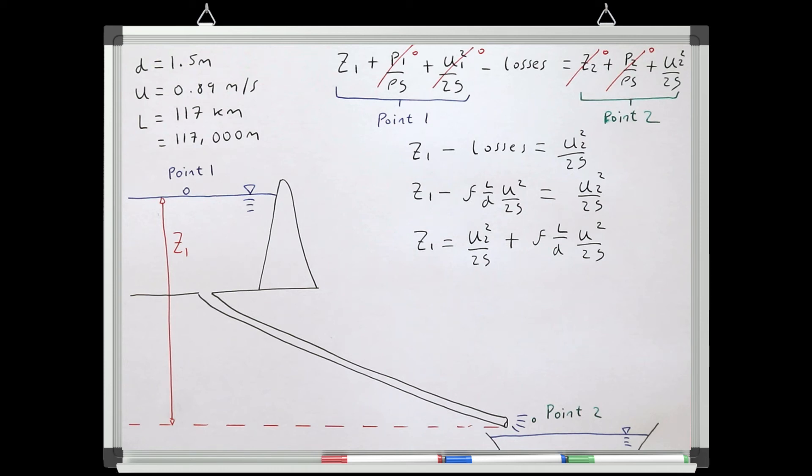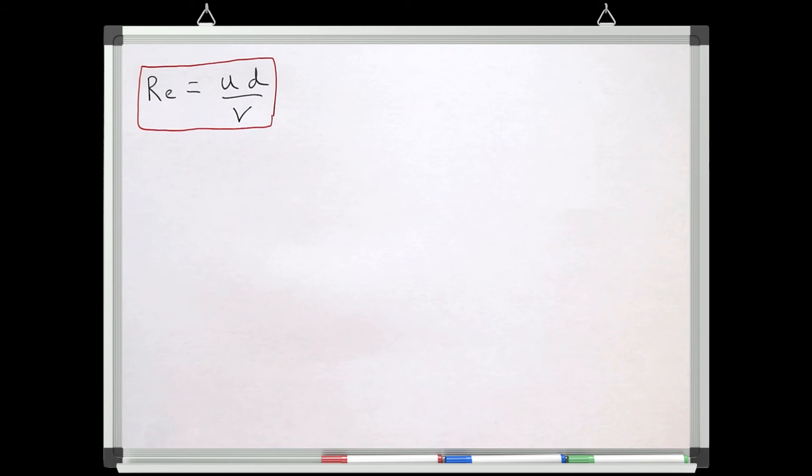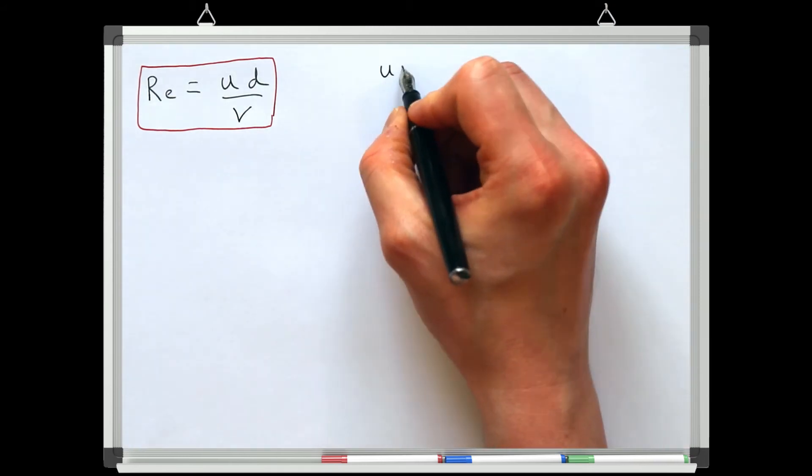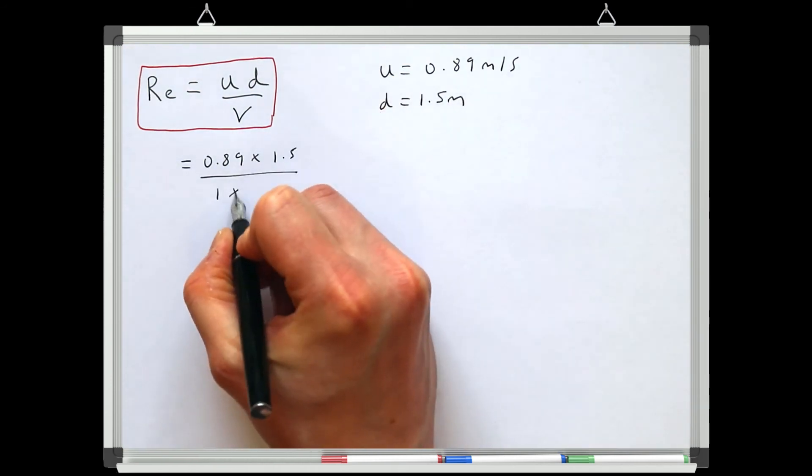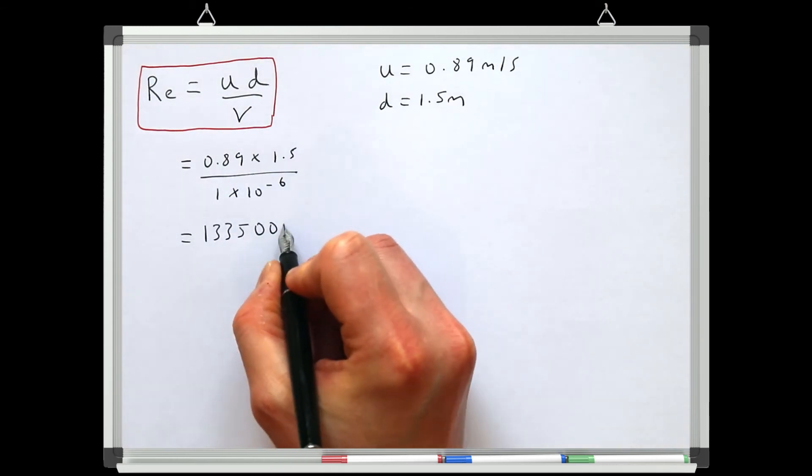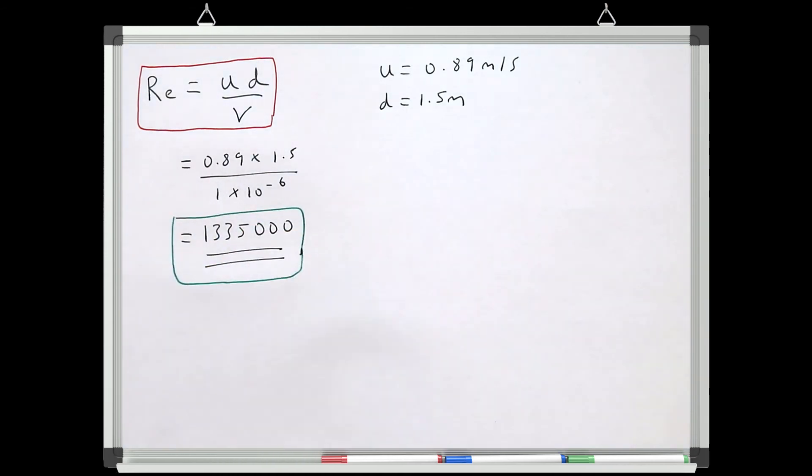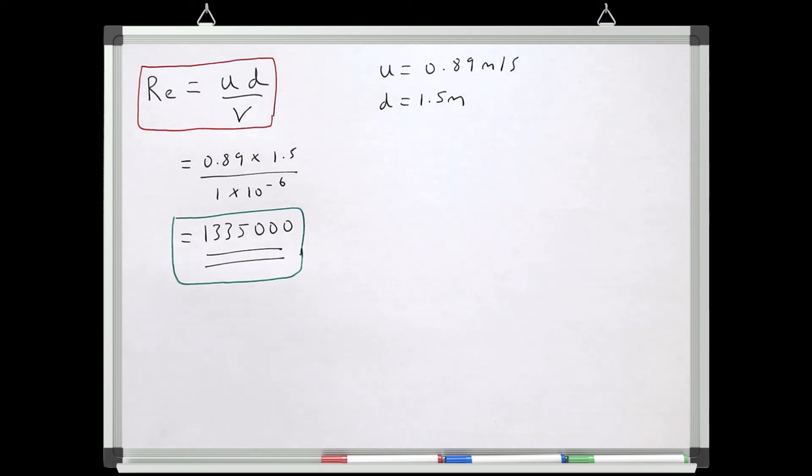So we'll just work through that quickly now. The first step is to find the flow's Reynolds number and Reynolds number is defined as the mean velocity times by the pipe's diameter divided by the fluid's kinematic viscosity. This gives us a Reynolds number of 1335000.